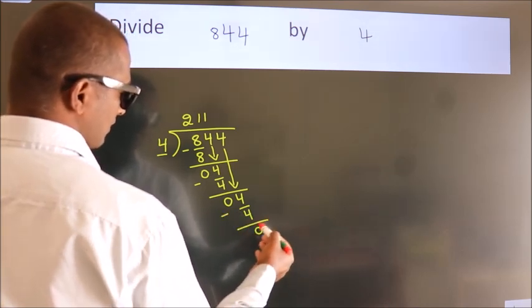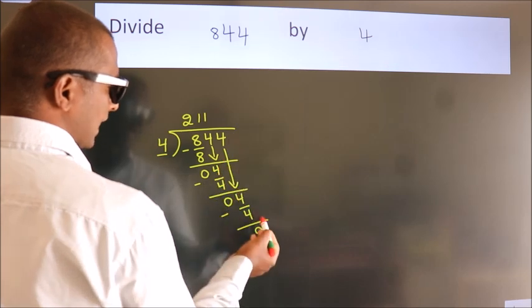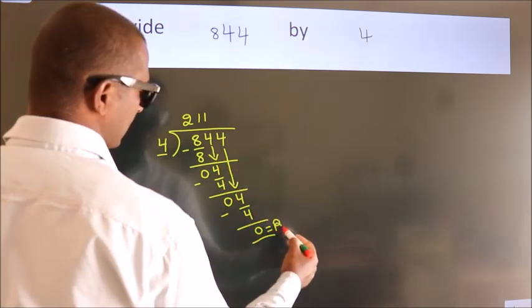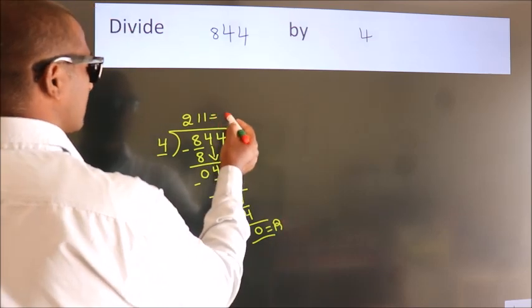After this, no more numbers to bring it down. So we stop here. This is our remainder. This is our quotient.